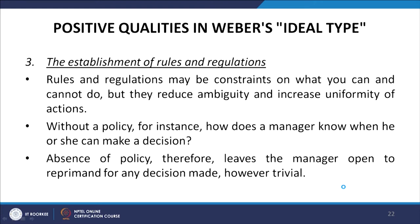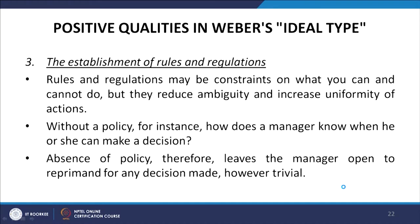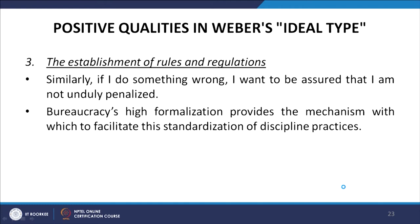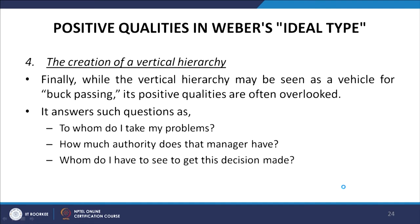Rules and regulations may constrain what you can and cannot do, but they reduce ambiguity and increase uniformity of actions. Without a policy, how does a manager know when he or she can make a decision? Absence of policy leaves the manager open to reprimand for any decisions made, however trivial. Similarly, bureaucracy's high formalization provides the mechanism to facilitate standardization of discipline practices, ensuring that employees are not unduly penalized.